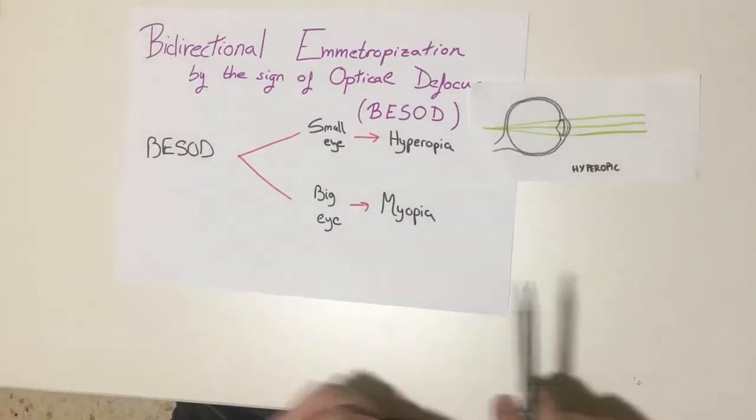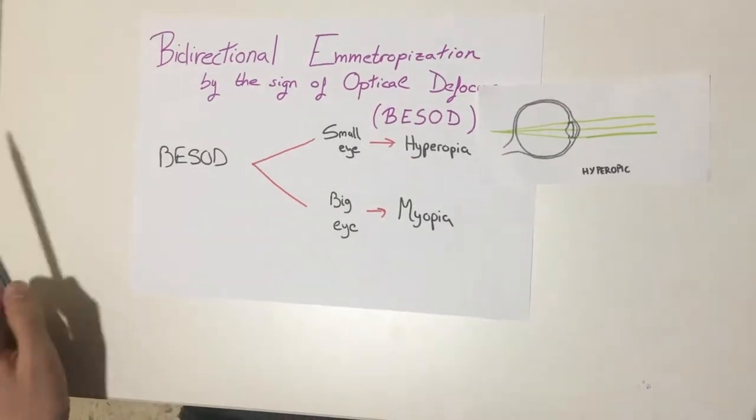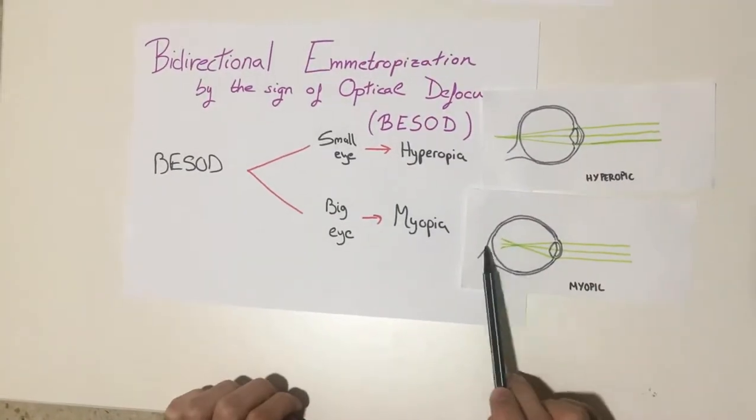In hyperopia, the rays meet behind the retina, and in myopia, they meet before the retina.